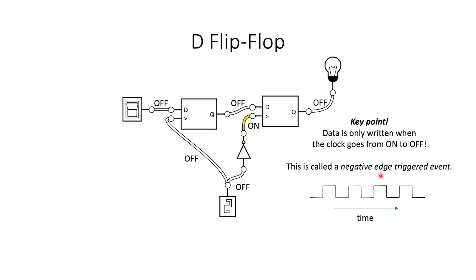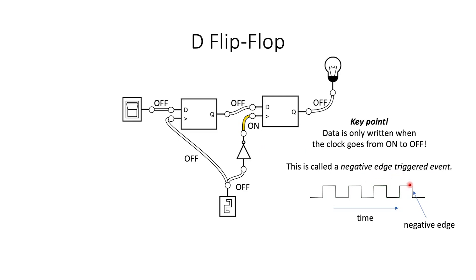In a timing diagram, time goes from left to right. A low line corresponds to the clock being off and a high line corresponds to the clock being on. This is called a negative edge triggered event because data is only written when the clock goes from on to off, which corresponds to these right-side lines which are negatively sloped. This is known as a negative edge. On the other hand, the transition from off to on is called a positive edge. The output data only changes when we pass over the negative edge.